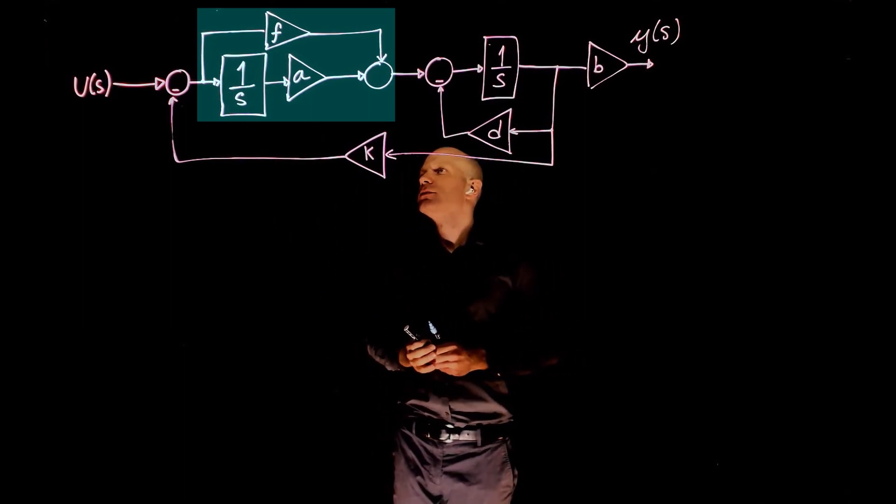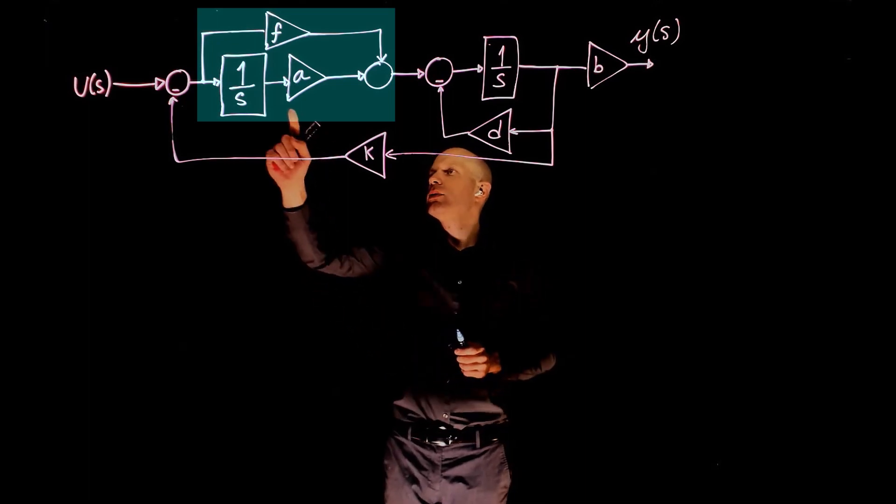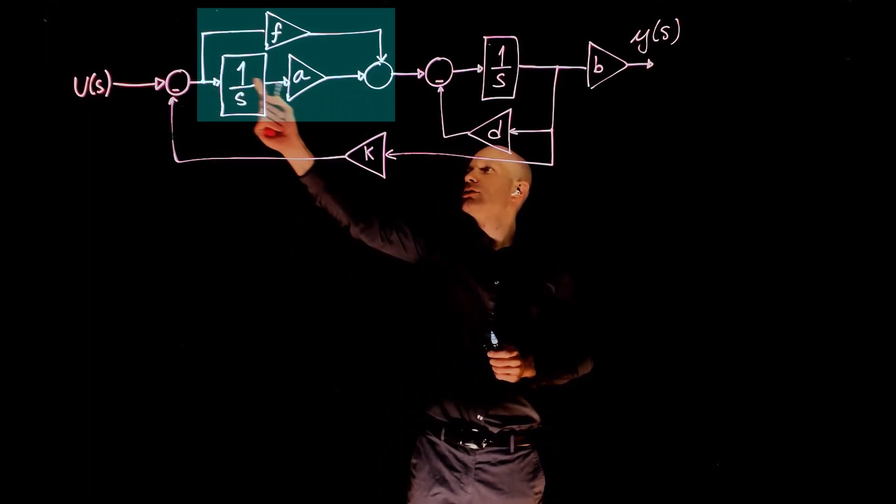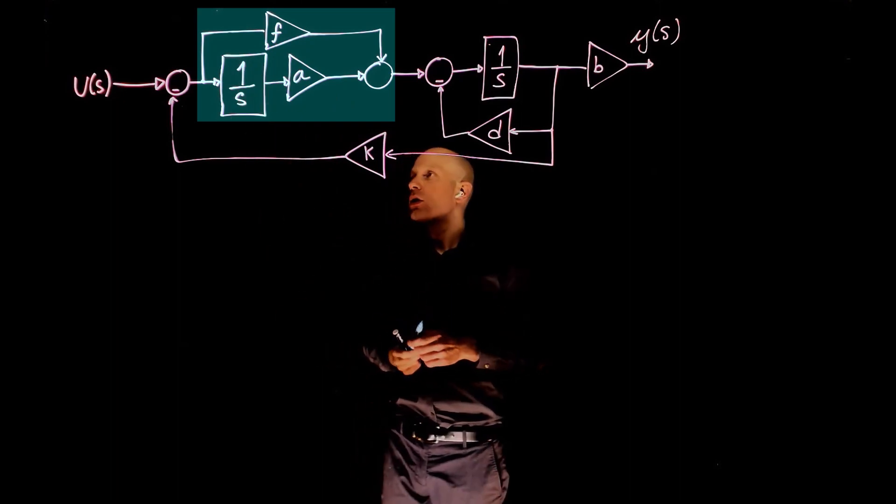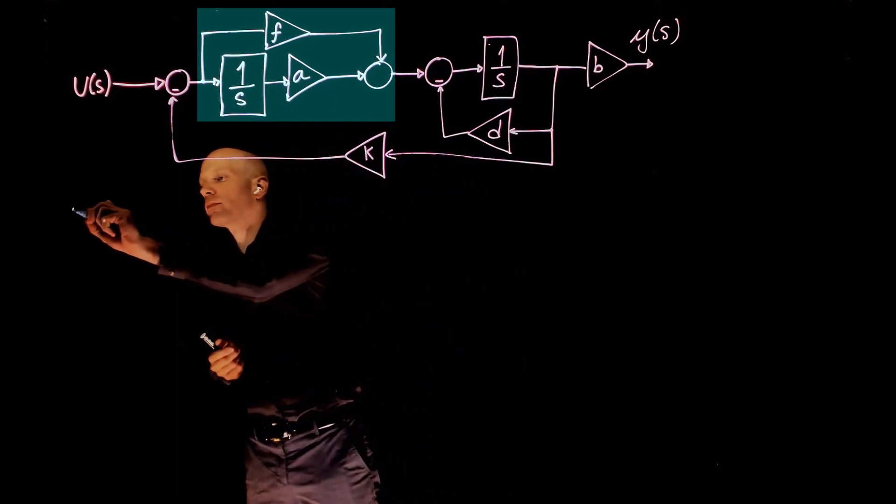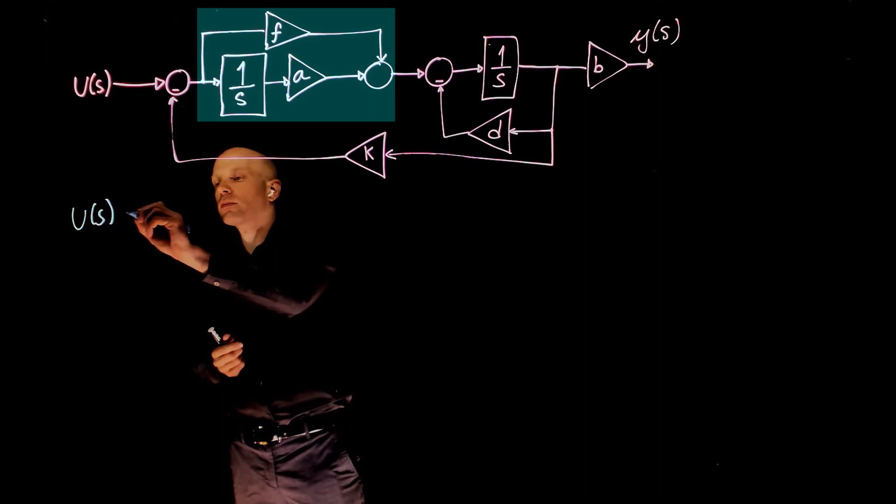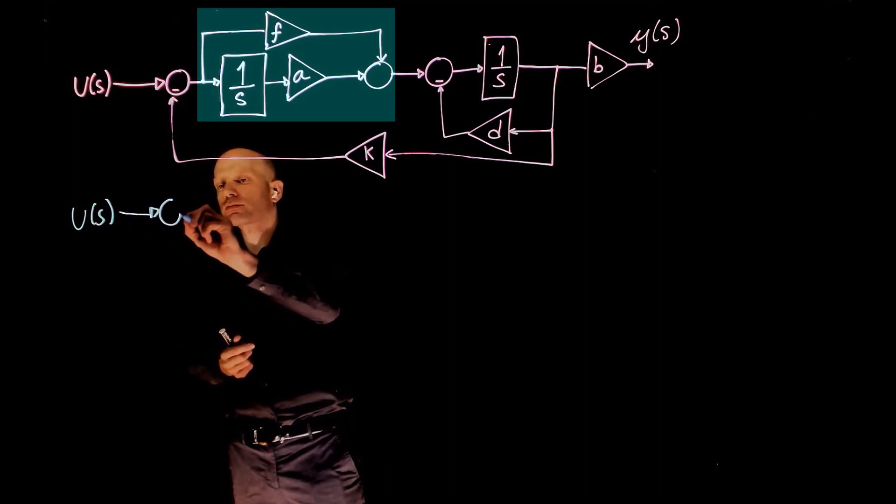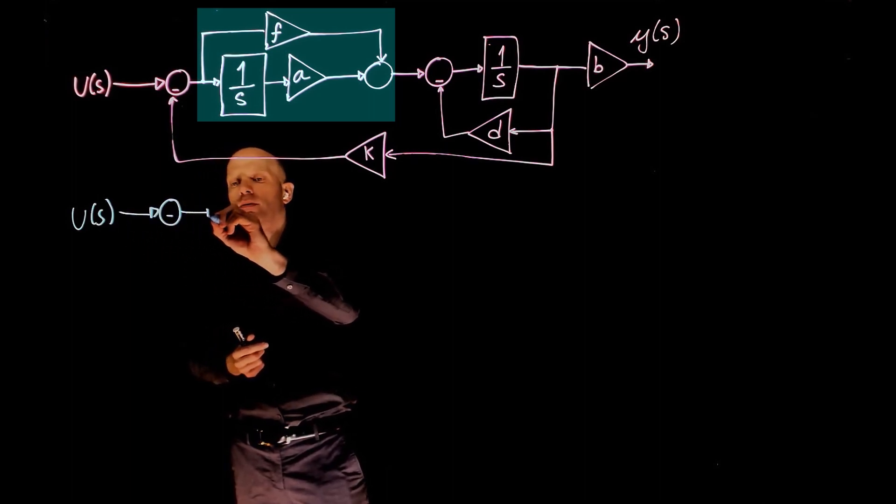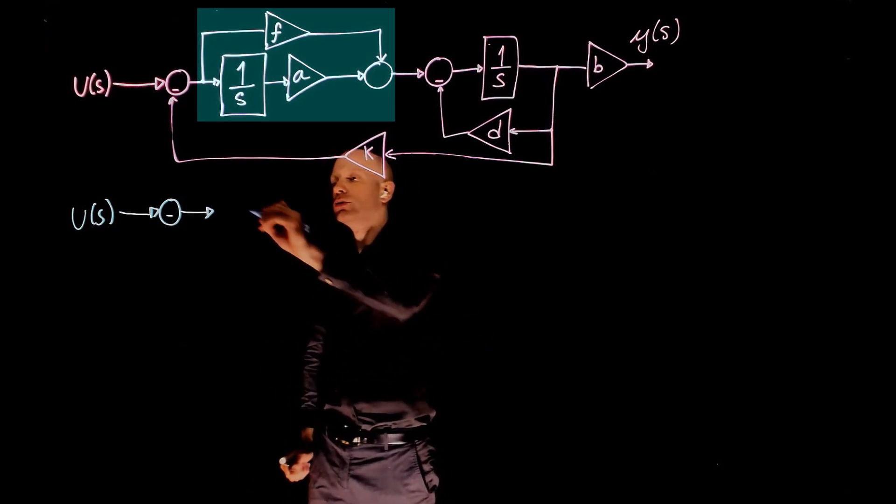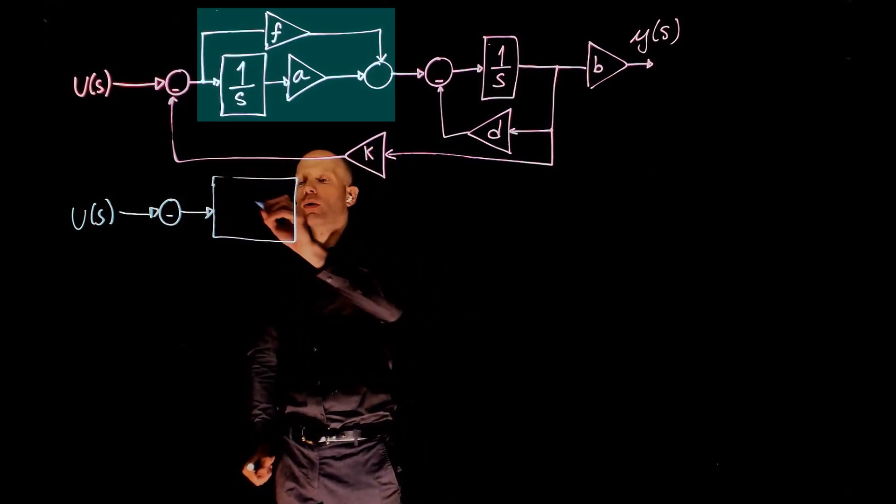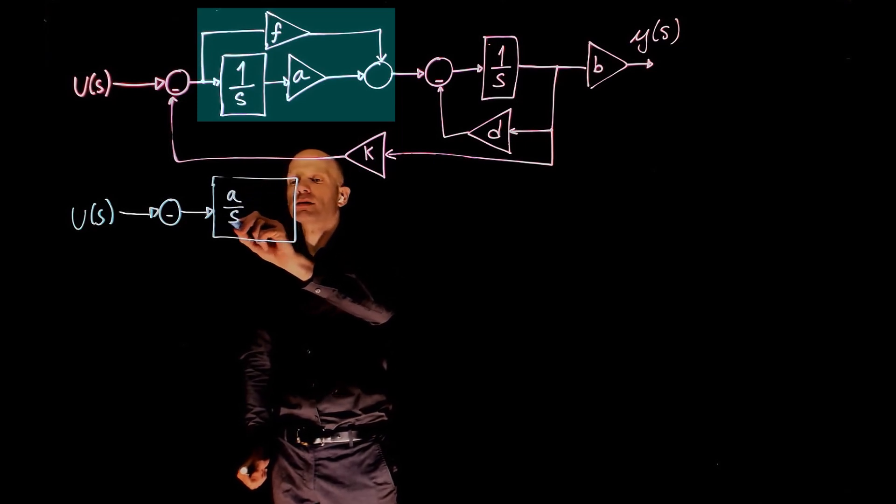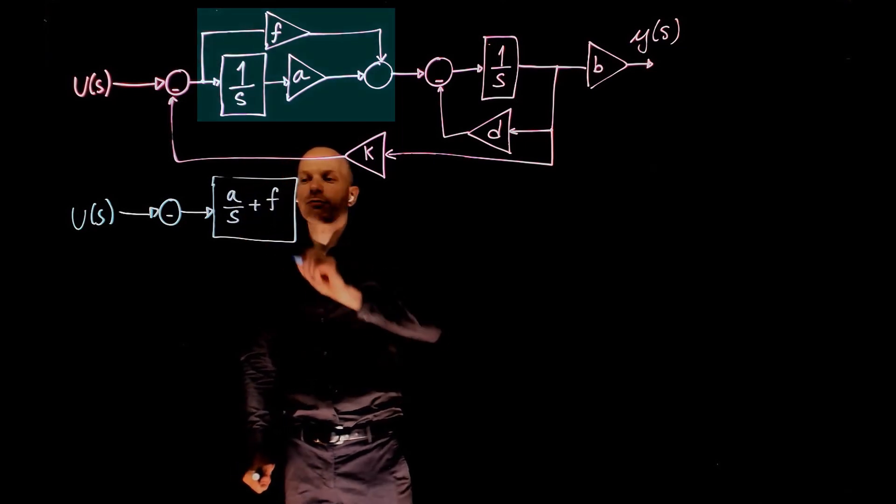These two blocks can be multiplied, and we can simply add this line to the line that comes from f. So this entire block here can simplify to a over s plus f.